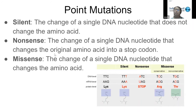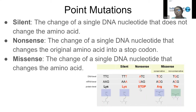Then there's a nonsense mutation, which is a change of a single DNA nucleotide that changes the original amino acid into a stop codon. Here we see that a nucleotide was changed to a U and it became a stop codon, which completely stopped that chain so that it's probably cut short. You should probably know the three stop codons by now from your studying or from undergrad biology or chemistry classes.